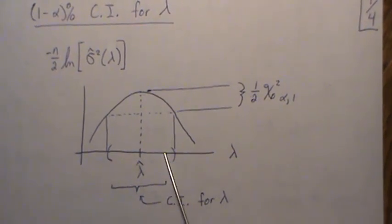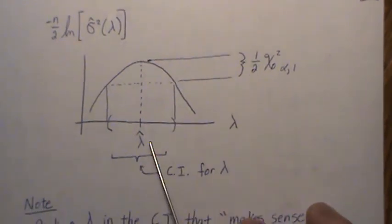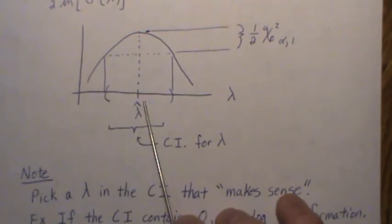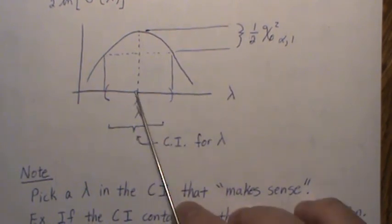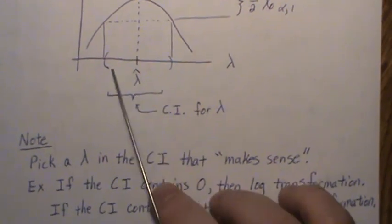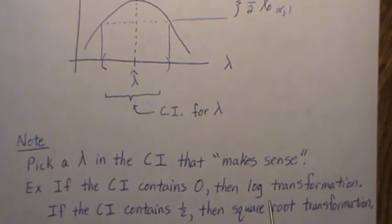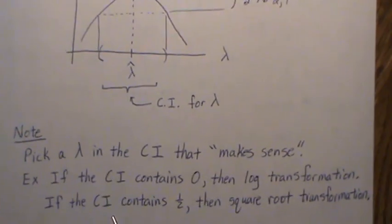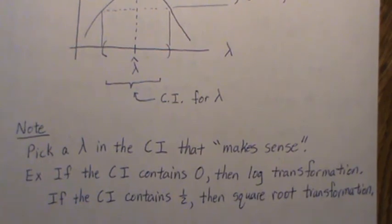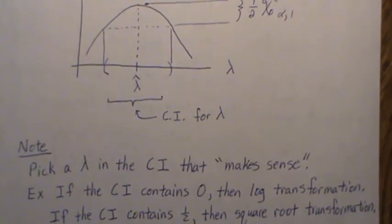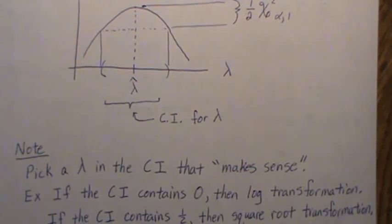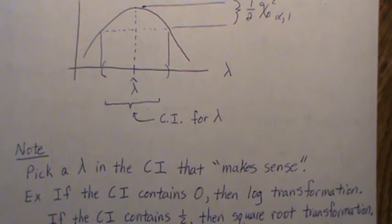To find the Box-Cox transformation in practice, we pick a lambda within this confidence interval that makes substantive sense. Usually we don't use the exact maximum likelihood estimator. If the interval contains zero, we may use a log transformation. Or if the interval contains one-half, we would use the square root transformation on y. That's all for the Box-Cox transformation — hopefully you enjoyed that. Please like the video and subscribe so you don't miss the next one. Thanks, bye.